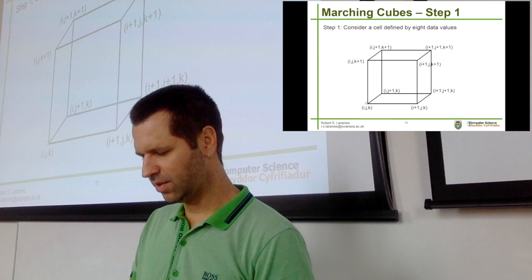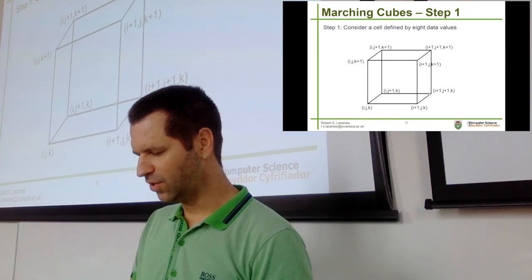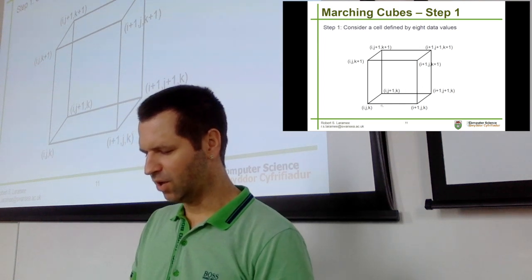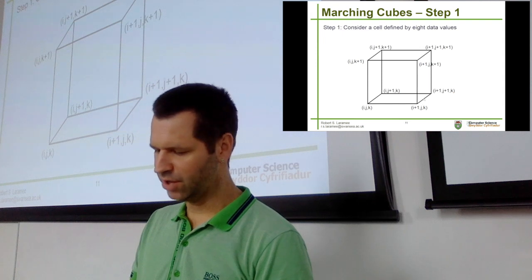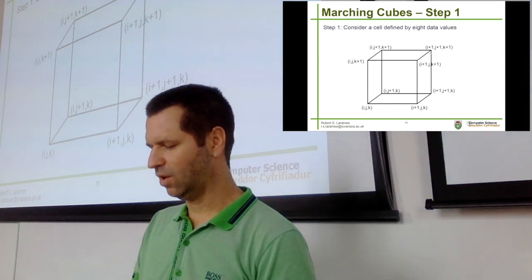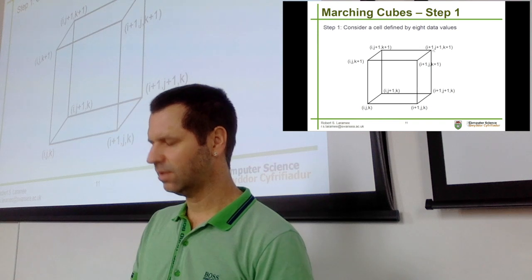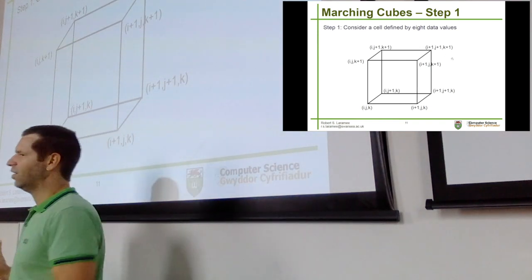Each corner gets an index — the data is stored at the corners. This lower-left corner is index I, J, K. Moving along: I+1, J, K; then I+1, J+1, K, and so on. So I is along the X direction, J is along the depth direction, and K is along the height or Y direction.